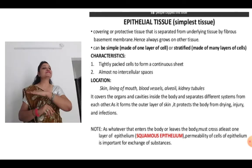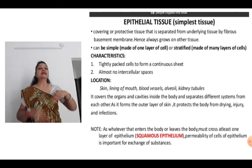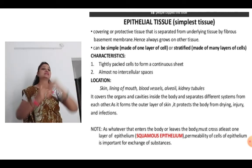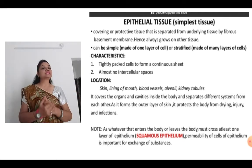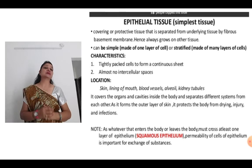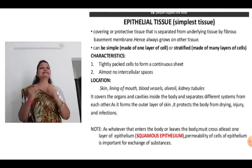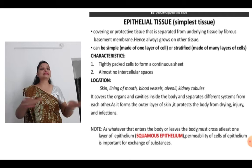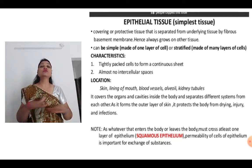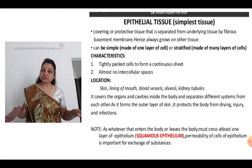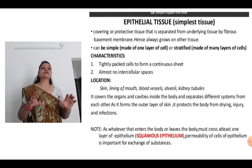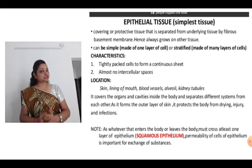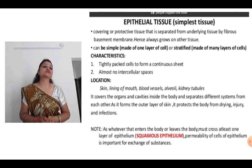Simple when one layer of cells will be there, and stratified when many layers are there one above another. The main characteristics of epithelial tissue are that they are tightly packed cells forming a continuous sheet — tightly packed means almost no intercellular spaces, that is why the continuous sheet is formed. Now the location in our body where this tissue is found: